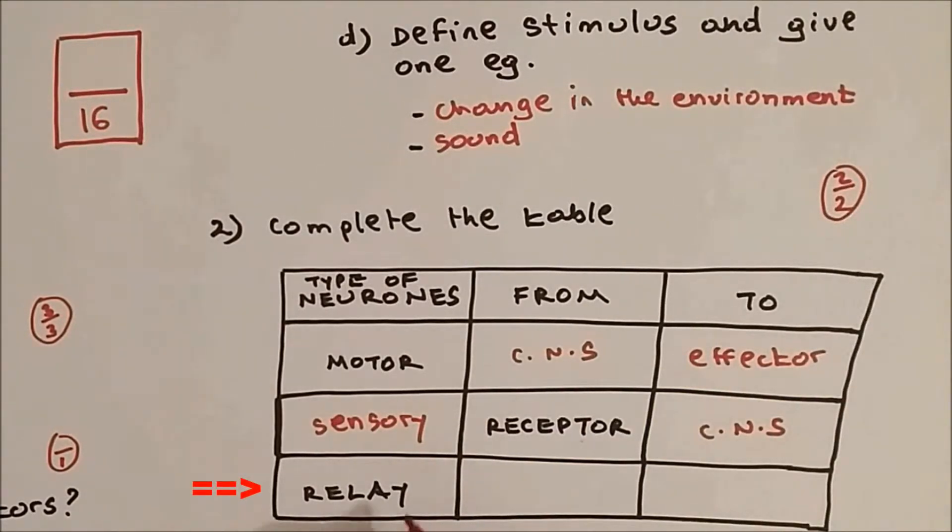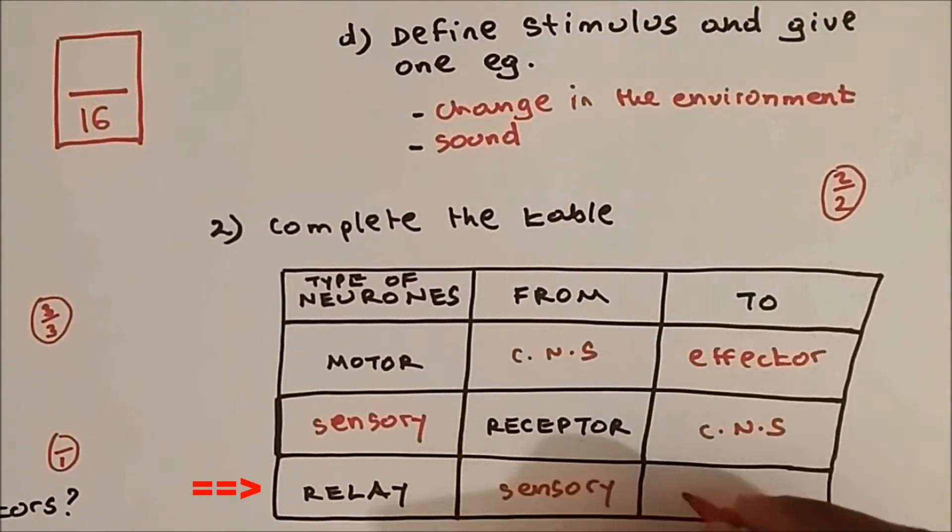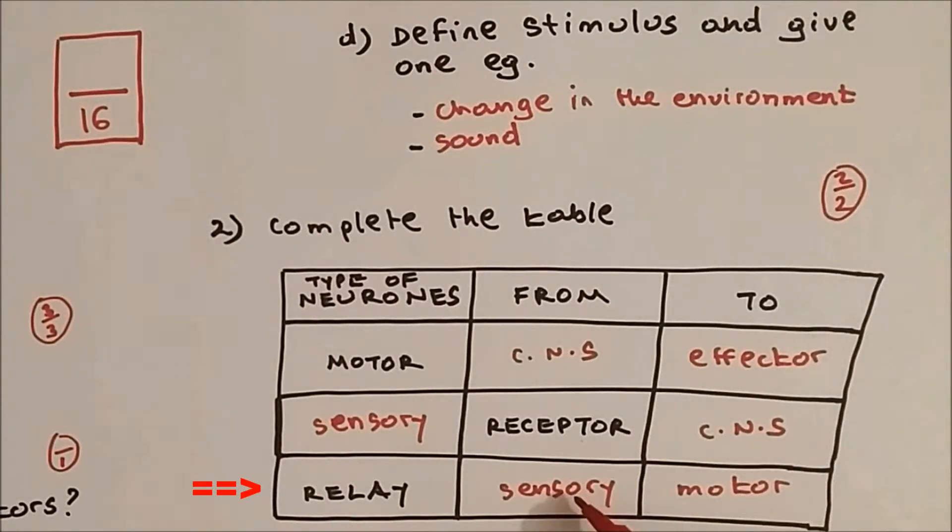Now relay connects the sensory neuron to the motor neuron, so electrical impulses carry from the sensory neuron to the motor neuron. Six points, six out of six.